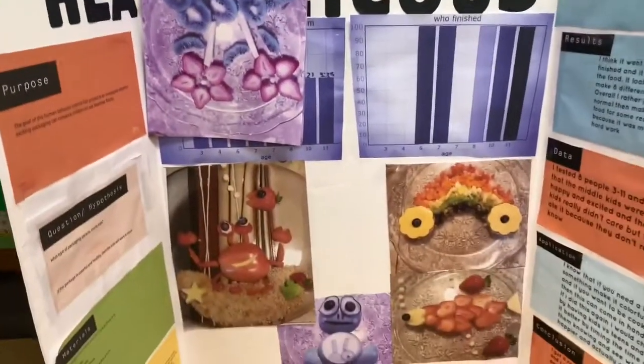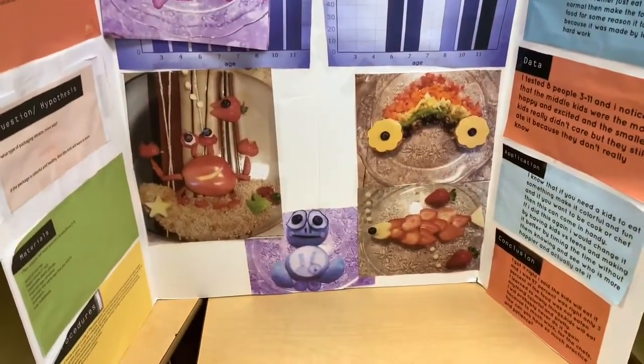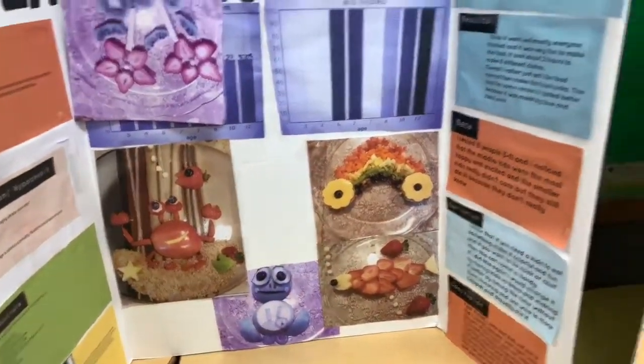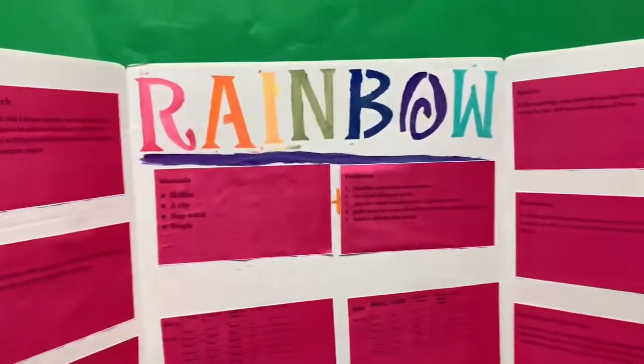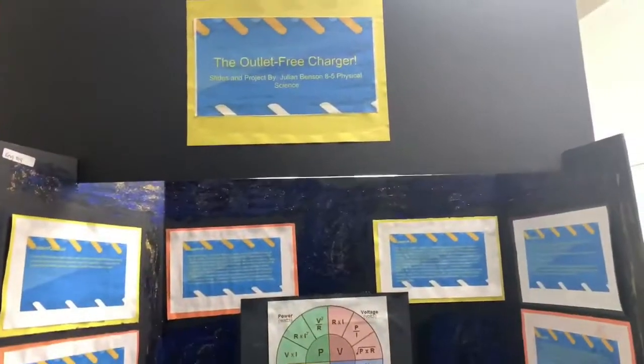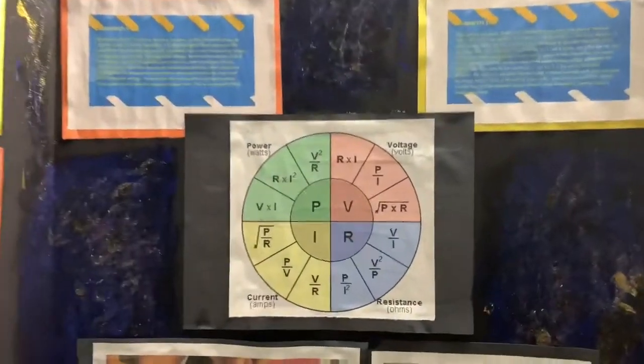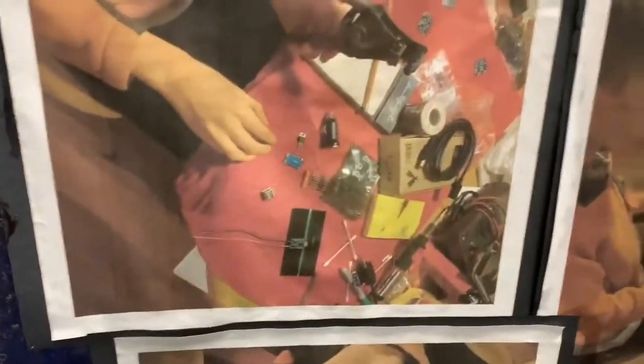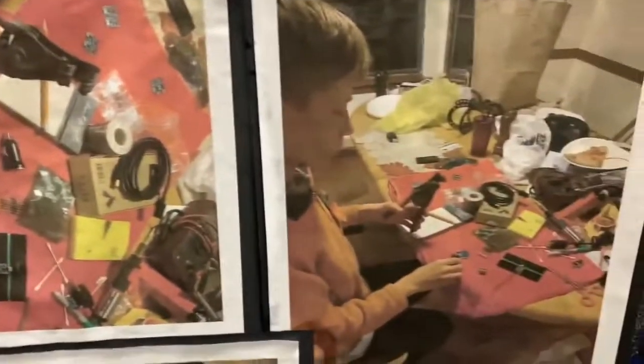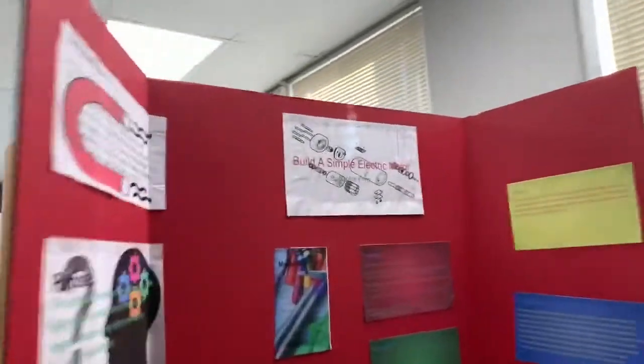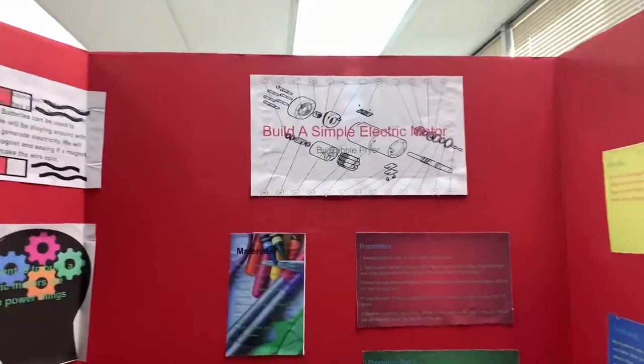This project is titled 'Rainbow' — about healthy fruits and veggies. Next is 'The Outlet Free Charger,' a pretty interesting experiment with photos. Up next we have 'Build a Simple Electric Motor.'